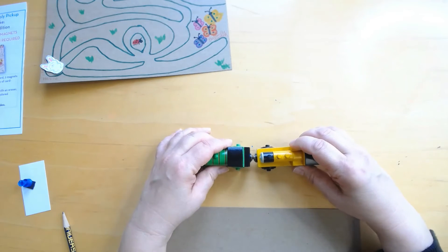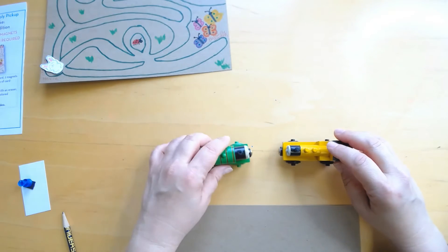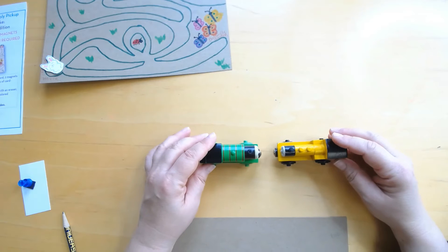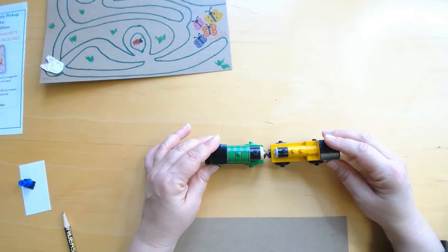Attracts. So these are opposite poles and these are same poles. See, no matter what I do I can't make them stay. They just repel. Kind of cool, right?